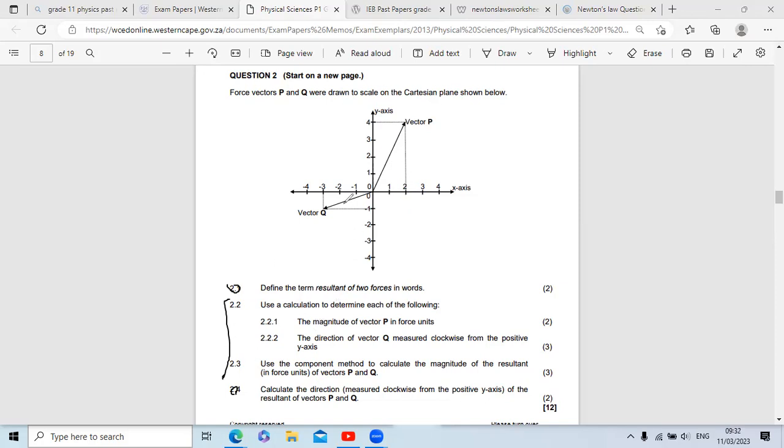I think this is a fairly easy question because the best part is it is actually drawn to scale. So you know that for vector P you have two components, your x and y component. Your x component is here, that's going to be like two newtons, and your y component is here, that's going to be four newtons. Yeah, x component for Q it's negative three and your x component for Q is negative one.